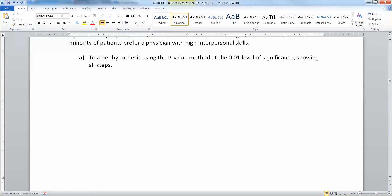The other physician was described as having average technical skills and high interpersonal skills. The physician with the high interpersonal skills was chosen by 116 of the people in the sample. A healthcare researcher argues that this study shows that a minority of patients prefer a physician with high interpersonal skills. Alright, so we are going to test her hypothesis using the p-value method at the 0.01 level of significance. Show all steps. Alright, I will do that.